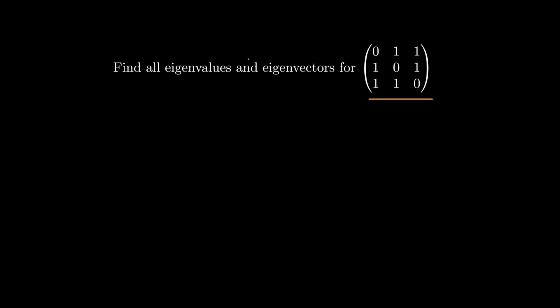Just to remind you what that is: we're given an n by n matrix and we're interested in solving this equation here, solving for all the x and for all the lambda which make this equation hold. It's important to keep in mind that we're solving for two things — we're solving for all the lambda and all the x.